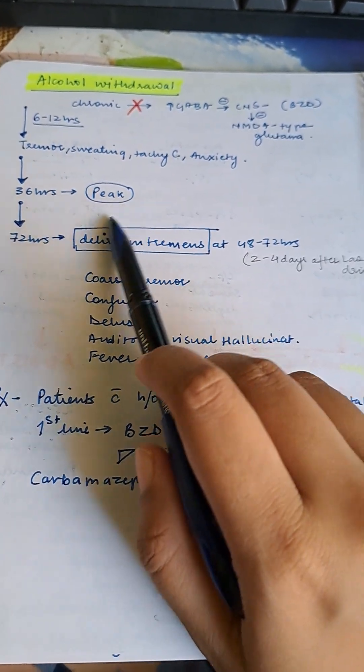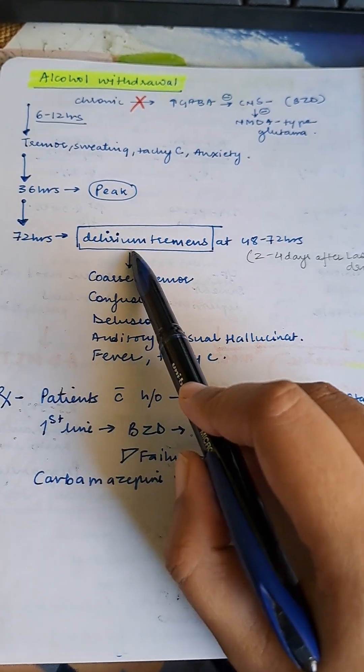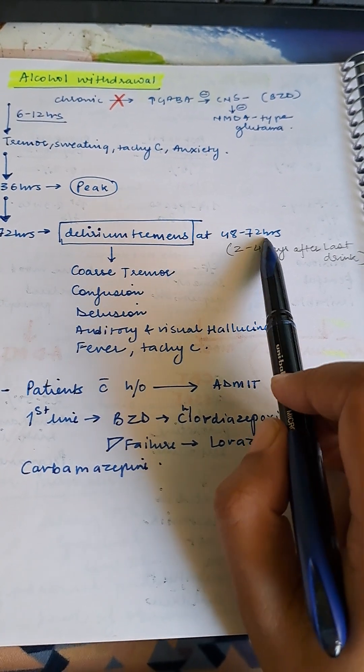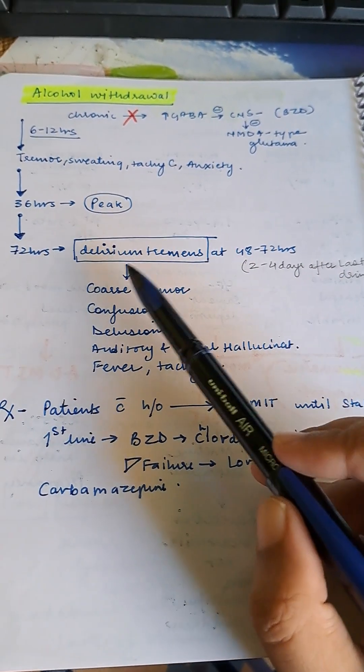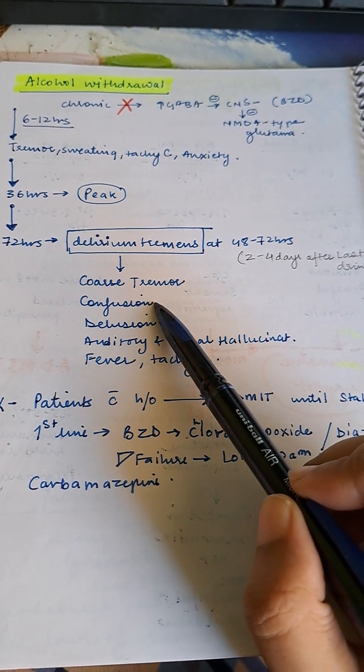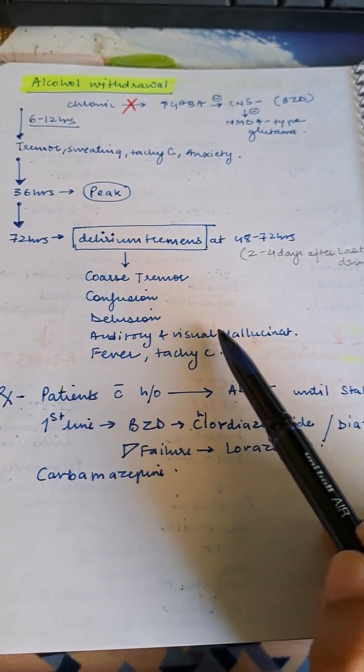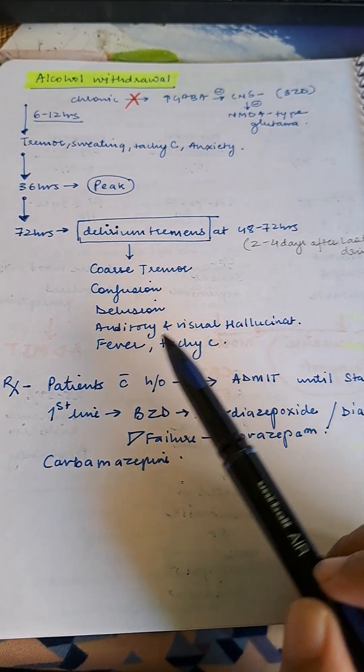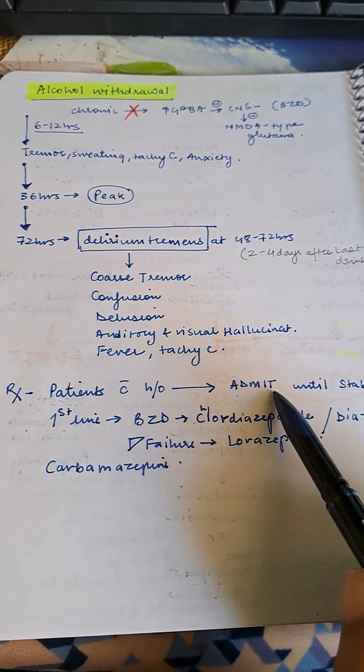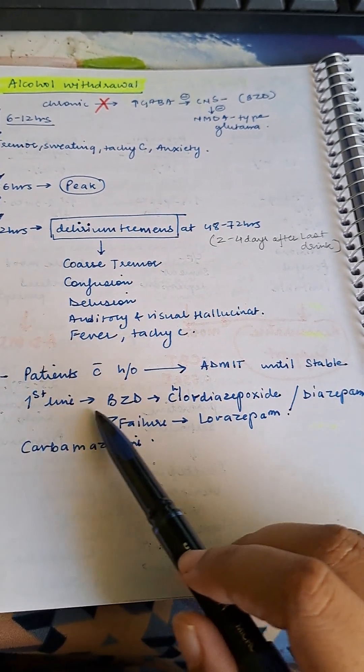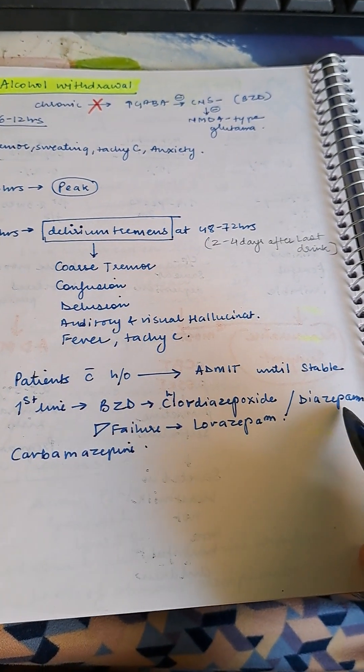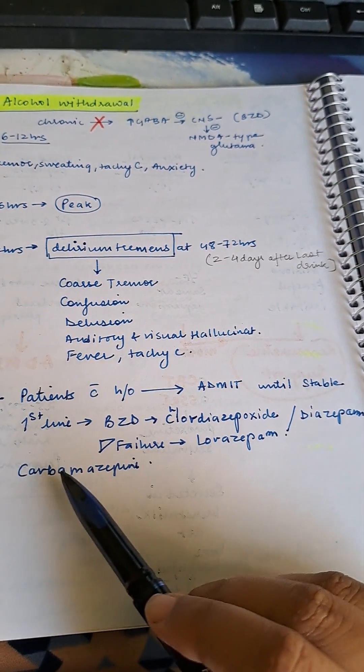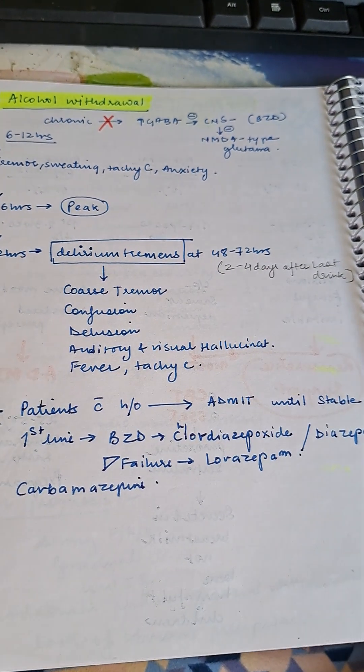Symptoms peak after 36 to 72 hours. Delirium tremens can occur up to 72 hours or 2 to 4 days after last drink. Causes tremor, confusion, delusions, auditory and visual hallucinations, fever, and tachycardia. Treatment: admit until stable, first-line benzodiazepine, chlordiazepoxide or diazepam. In liver failure, give lorazepam. Third option is carbamazepine.